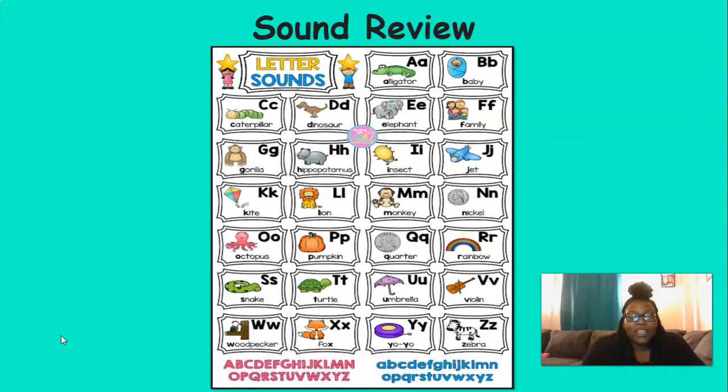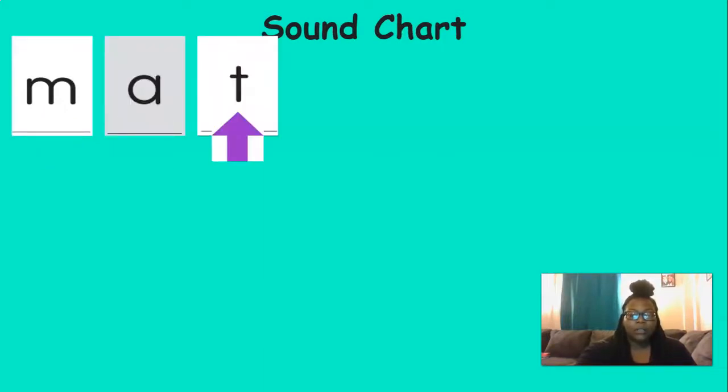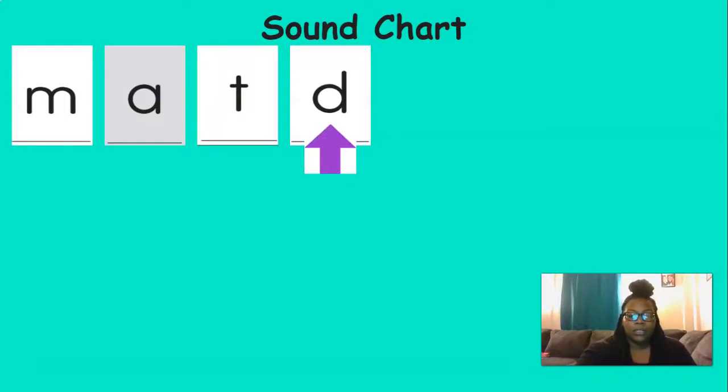Okay, now it's time to review the sounds that we've learned. You ready? Remember, when you see the purple arrow, just say the sound. M, eh, t, t, t, t.